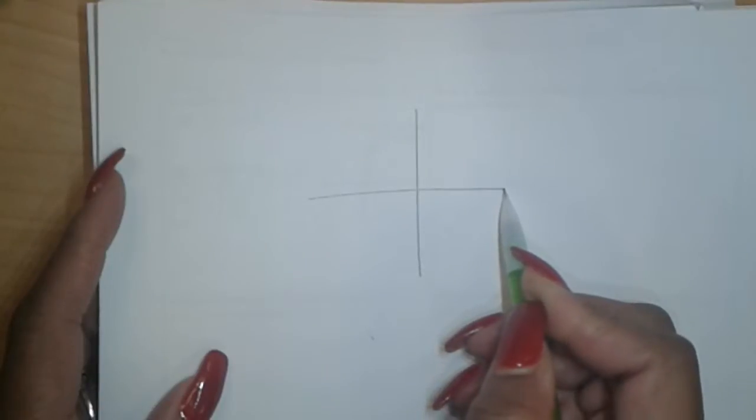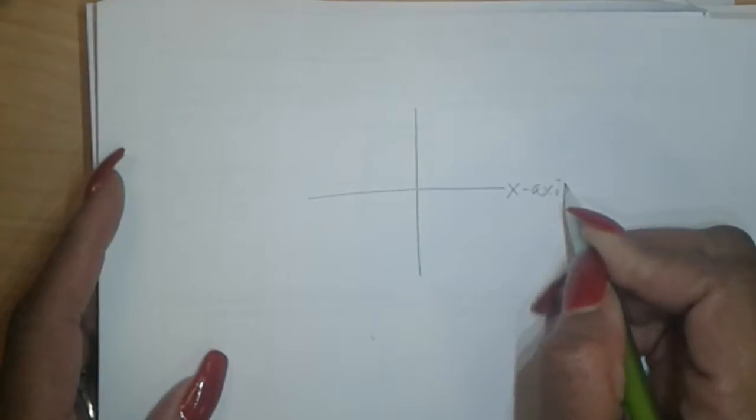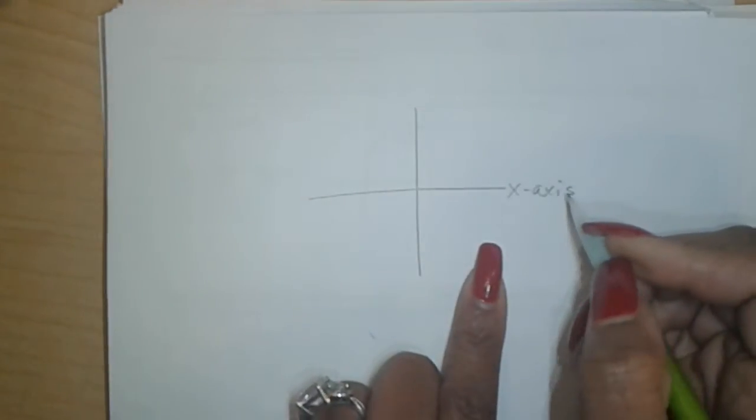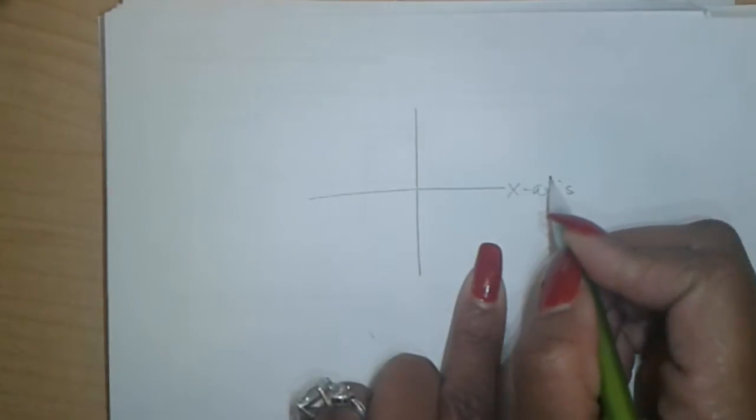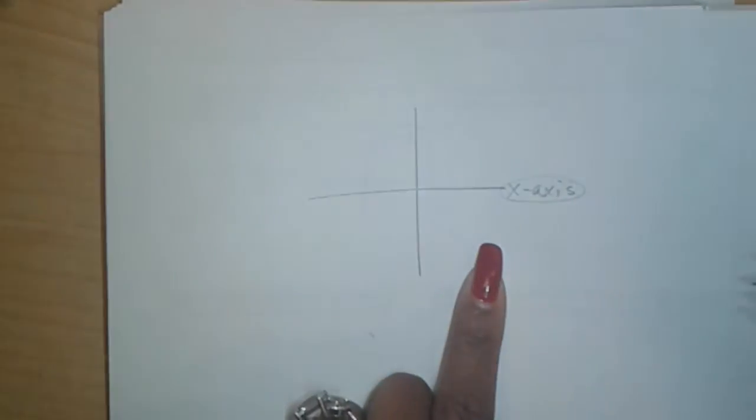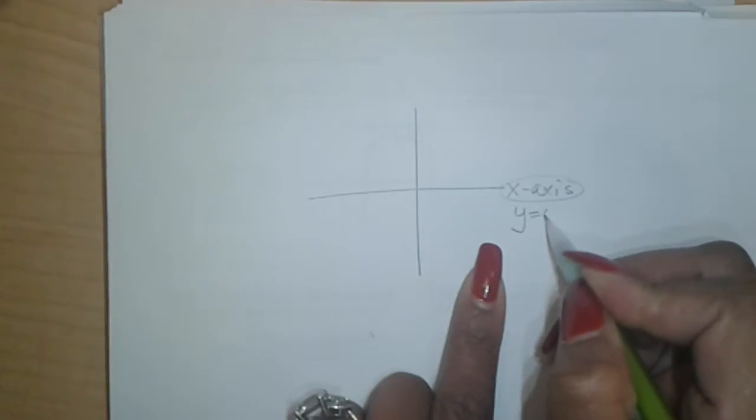Very brief video. We want to write an equation of a line that is parallel to the x-axis. Now be very, very careful. The x-axis has two names. It is called the x-axis, but because it lays down, it is also y equals zero.